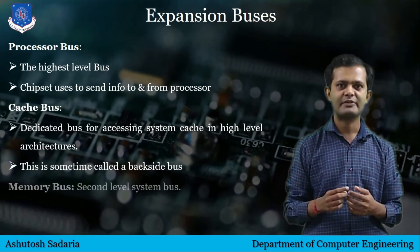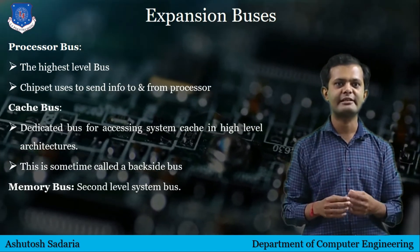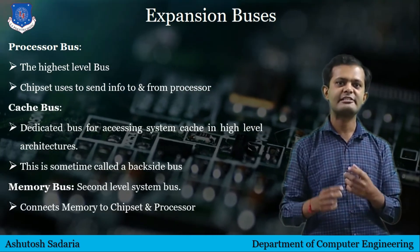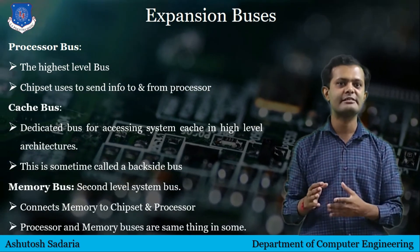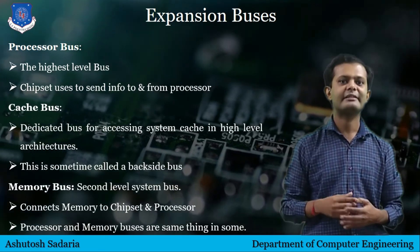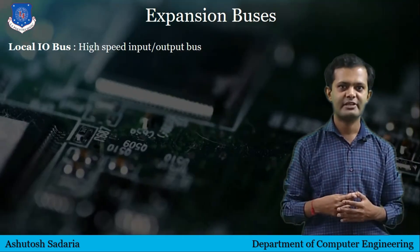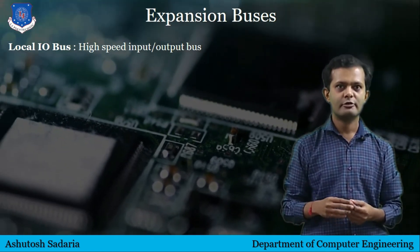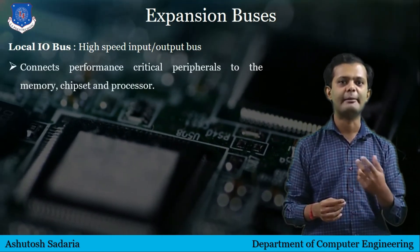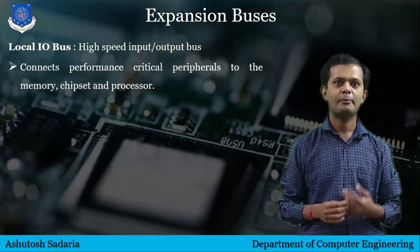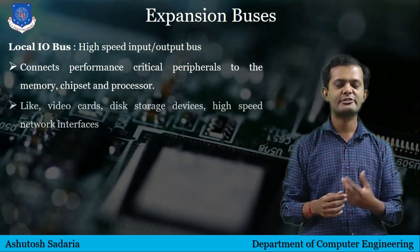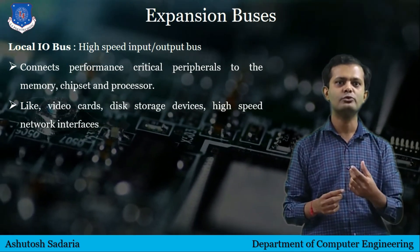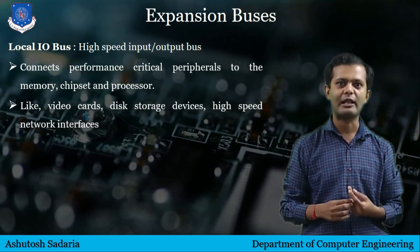The next bus is the memory bus, which is a second-level system bus that connects the memory subsystem to the chipset and processor. In some systems, the processor and memory buses are the same. The next is the local I/O bus, a high-speed input/output bus used for connecting performance-critical peripherals to the memory, chipset, and processor — for example, video cards, disk storage devices, and high-speed network interfaces.